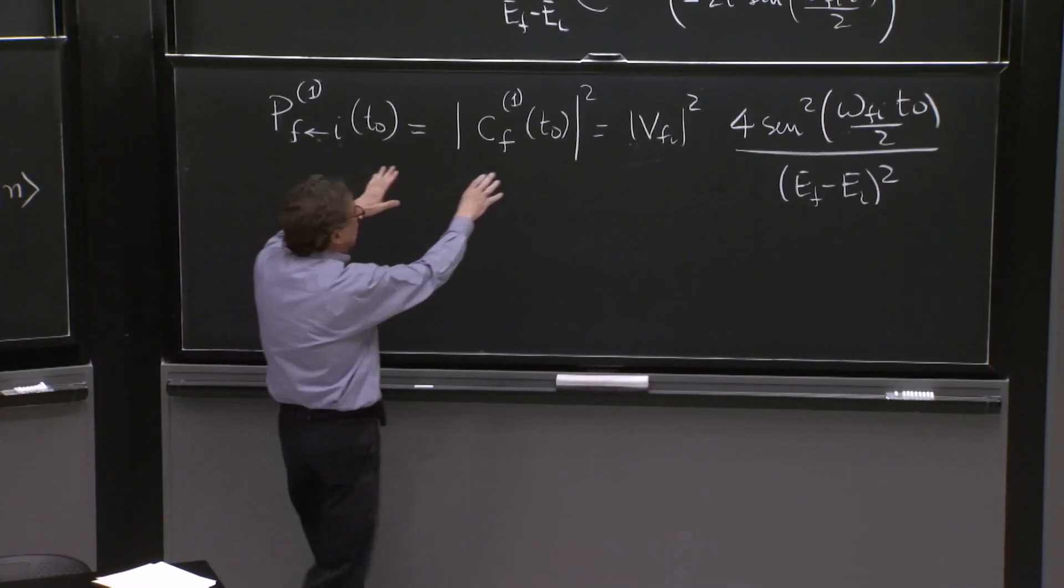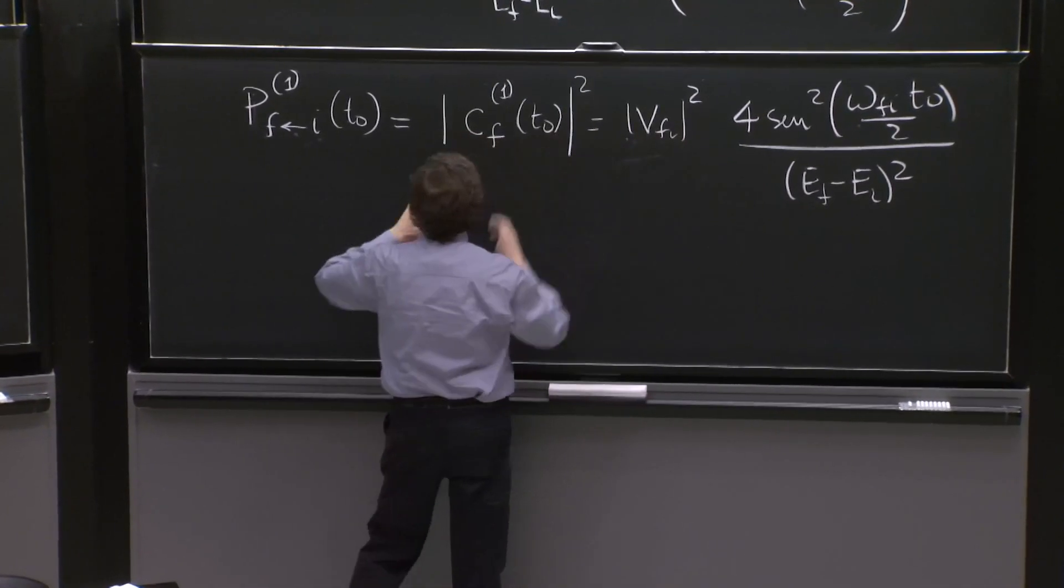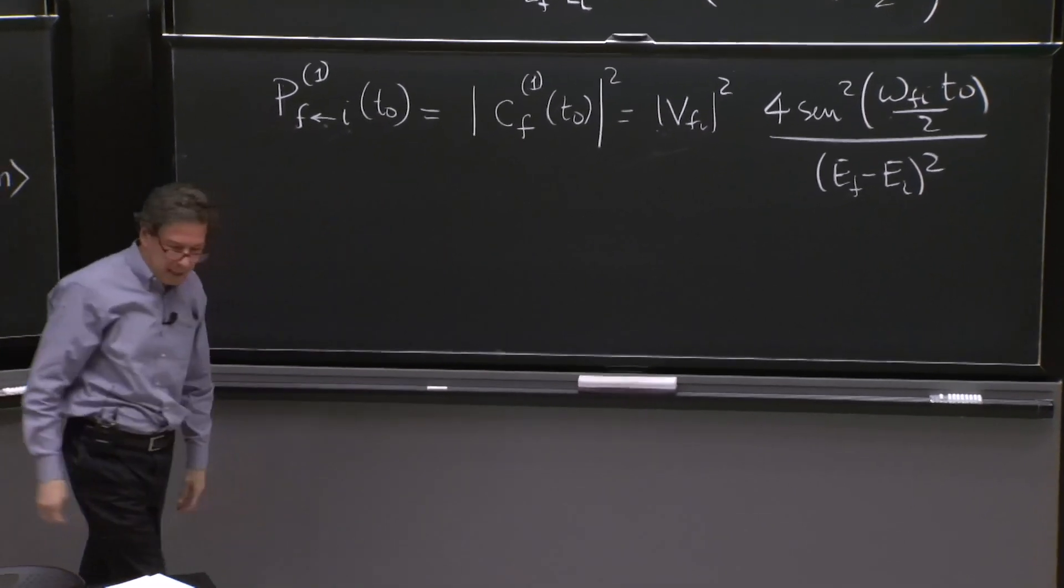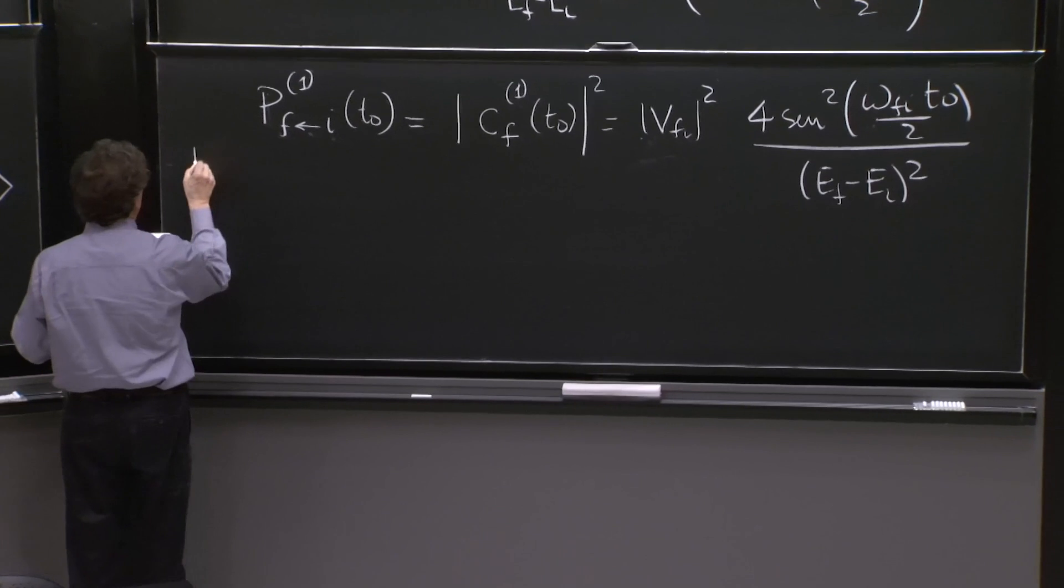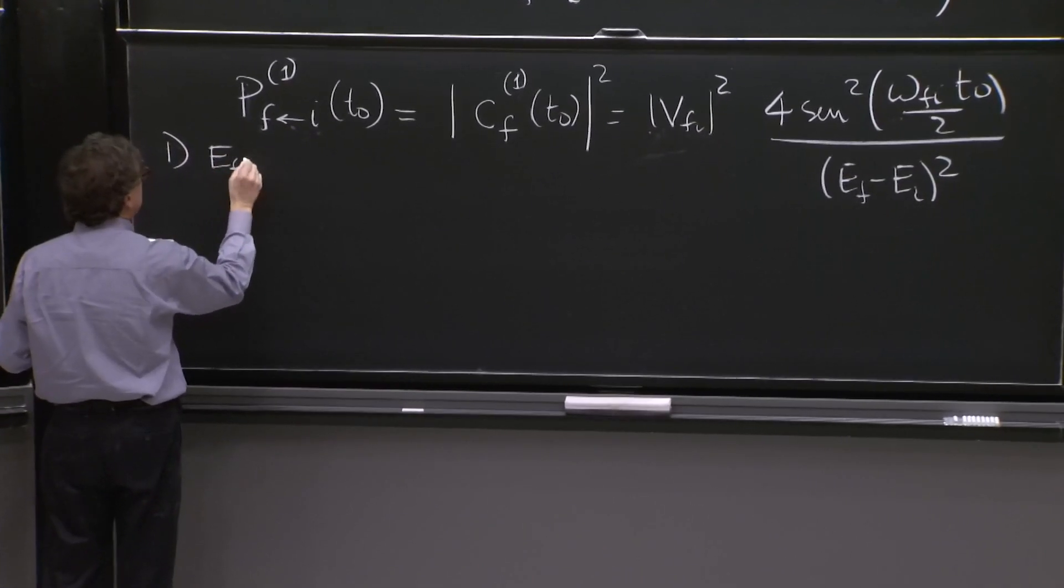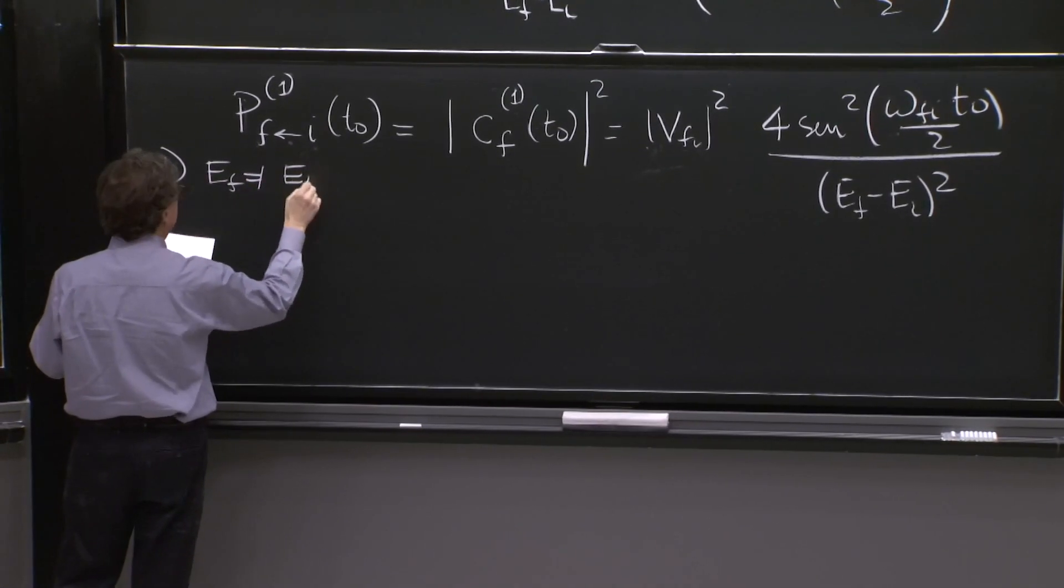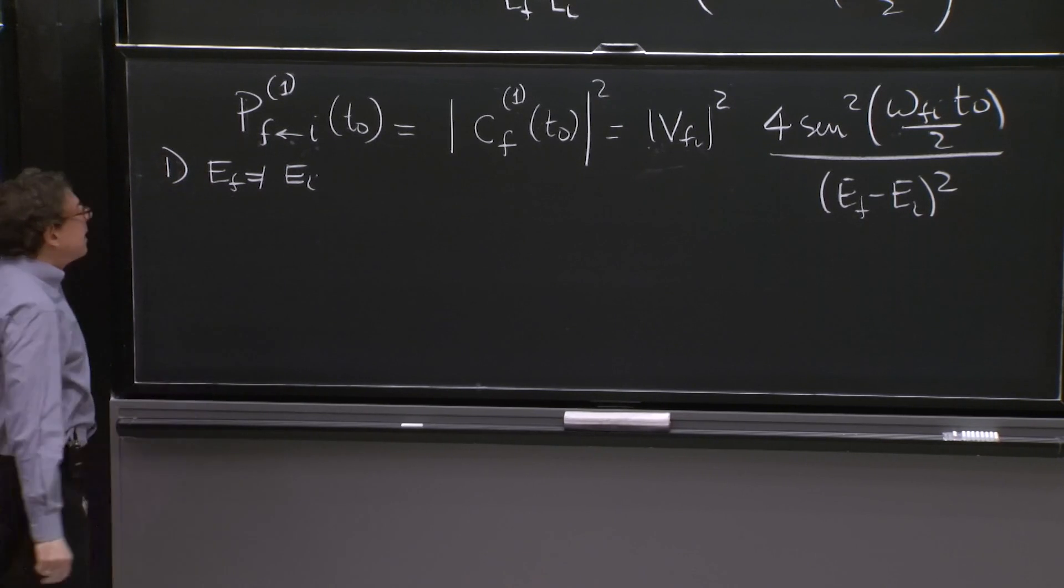I want to understand this function better. Because this is a transition from initial state to final state, and it looks like that. So let's understand it better. Suppose, one, ef is different from ei. Then how does it look?